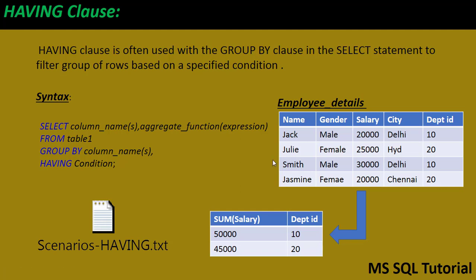First, we'll see what the HAVING clause is. The HAVING clause is often used with the GROUP BY clause in the SELECT statement to filter groups of rows based on a specified condition. For example, with employee details grouped by department ID, I can apply a condition such as average salary greater than or equal to 45,000 to get specific groups of rows. In this scenario I use the HAVING condition.